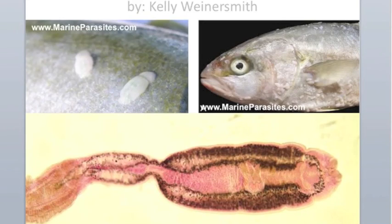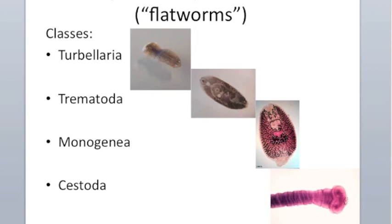The first parasite group we're going to talk about are the monogenians. These are common parasites of fish found in freshwater, marine, and estuary environments. This is the first group of platyhelminthes parasites. Most of the time when people think about parasites, they're thinking of a parasite that's in the platyhelminthes phylum.